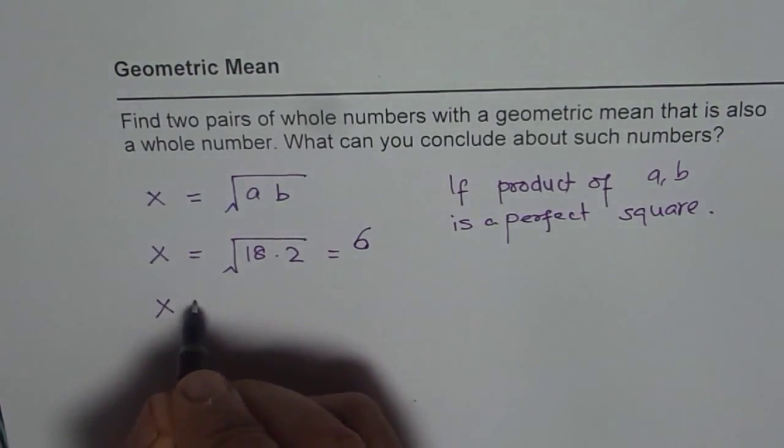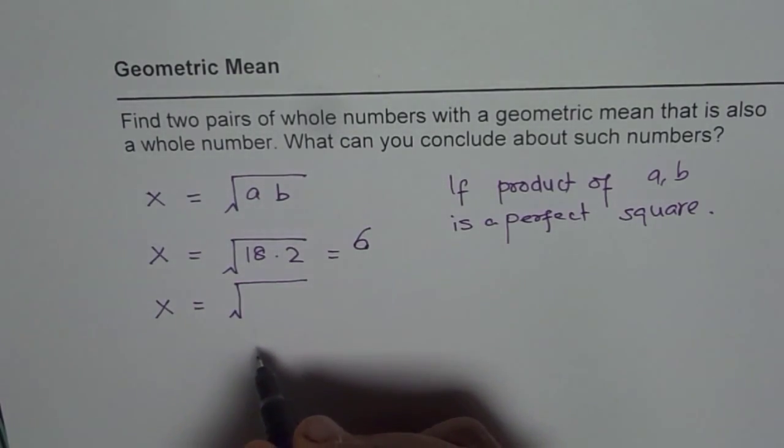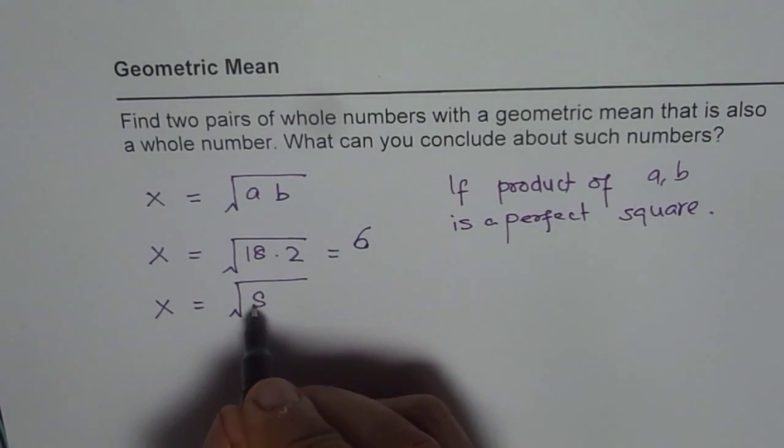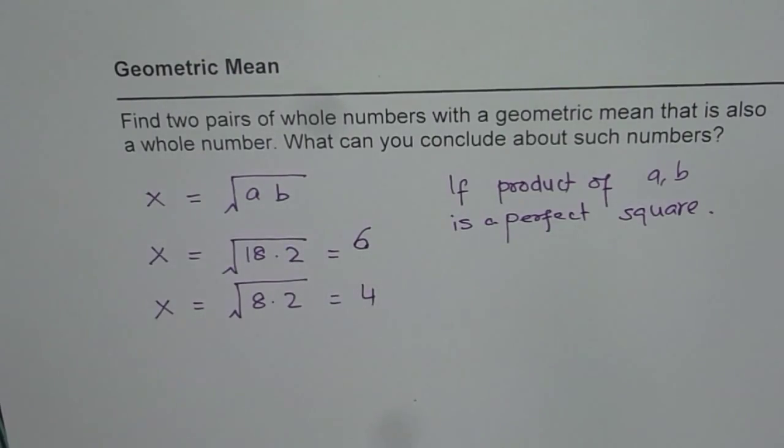The other set of numbers could be, let us say we are looking for 16. So 16 is 8 times 2. 8 times 2 is 16, that means square root will be 4.